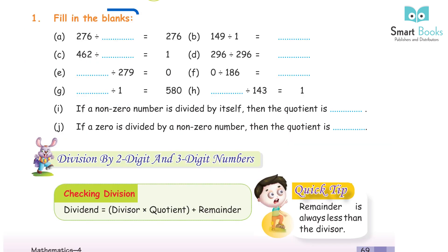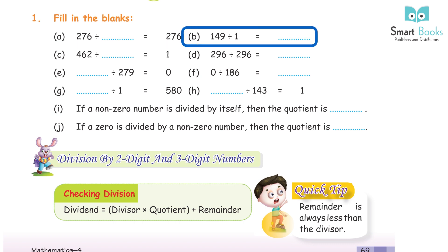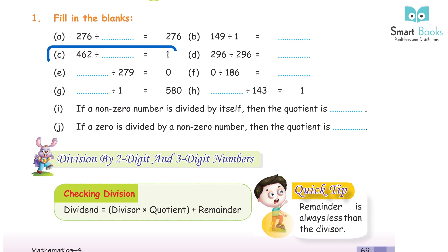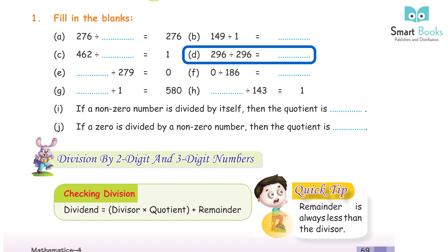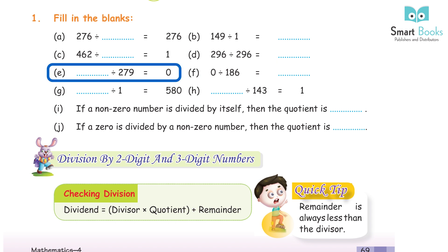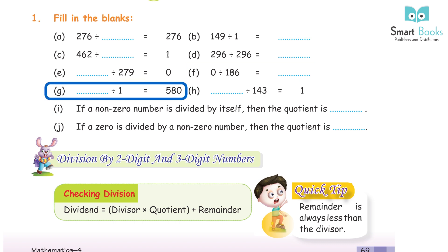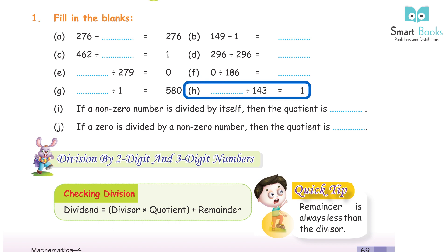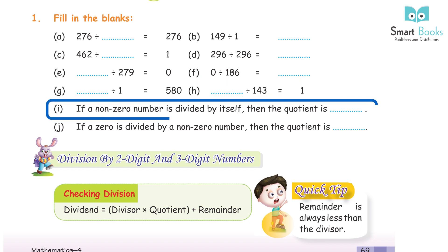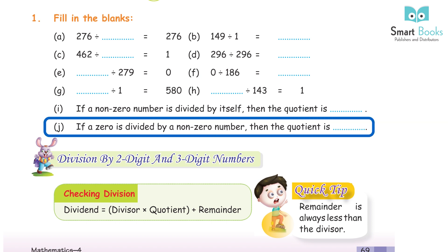Exercise 6.1 — fill in the blanks: a) 276 ÷ 1 = 276, b) 149 ÷ 149 = 1, c) 462 ÷ 462 = 1, d) 296 ÷ 296 = 1, e) 0 ÷ 279 = 0, f) 0 ÷ 186 = 0, g) 580 ÷ 1 = 580, h) 1 ÷ 143 = 1, i) if a non-zero number is divided by itself then the quotient is 1, j) if zero is divided by a non-zero number then the quotient is 0.